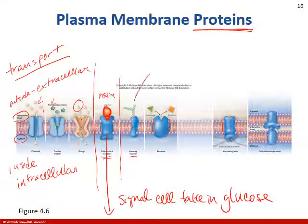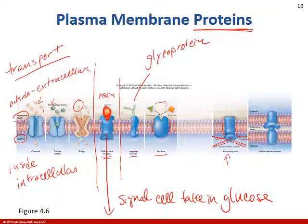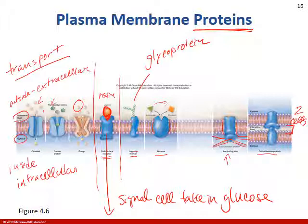Identity markers — the glycoprotein acts as a cell tag so your body knows whether it's your cell or a foreign cell that needs to be disposed of. Enzymes can be embedded in the plasma membrane to break down substrates into products. There are anchoring proteins where the cytoskeleton can bind to give the cell its specific shape. And cell adhesion proteins allow two cells to stick together — we'll talk about the different types of junctions cells can have.